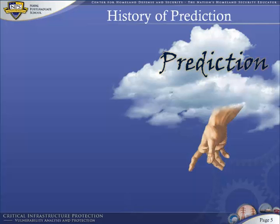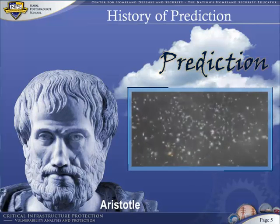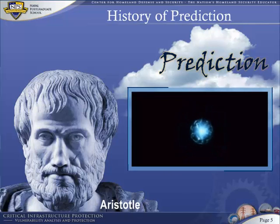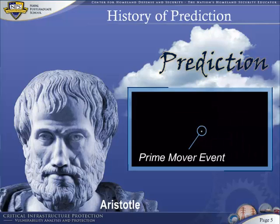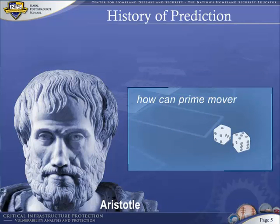First, a short history of prediction. Remember that the notion of mere mortals being able to guess at possible futures is a relatively recent idea. Throughout most of human civilization's history, prediction was thought to be the sole province of God. Humans were not expected to be able to predict anything. Aristotle had a vague idea of determinism — the prime-mover paradigm, whereby the mechanical rules of the universe were set in motion by an event at the beginning. But that idea began to fall apart in the 1500s with the rise of gambling. How could a prime mover anticipate the toss of a die? How could unexpected acts of God be traced all the way back to the beginning? Aristotle's prime-mover theory began to fall apart in the face of observation.